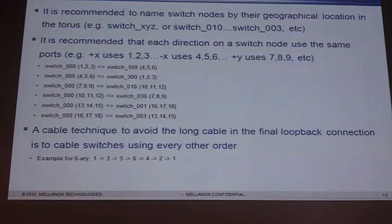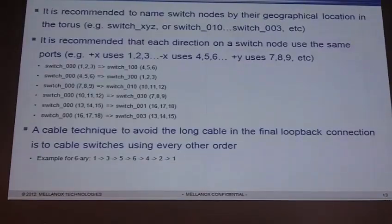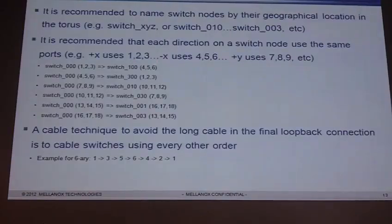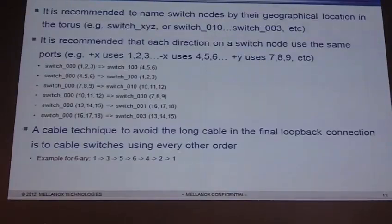Some cabling techniques if you are going to build a Taurus: first, it's recommended to name switch nodes by their geographical location within the Taurus — for example, switch X,Y,Z, like switch 0,1,0 or switch 003, depending on its coordinates. It's also recommended that each direction on a switch node use the same ports. For example, my plus X direction should always use ports 1, 2, and 3; my minus X direction always uses ports 4, 5, and 6. So the connection from switch 0,0,0 to switch 1,0,0 would always be ports 1, 2, and 3 connecting to ports 4, 5, and 6 on the other side — keeping it consistent makes it easy to verify your topology is built correctly.